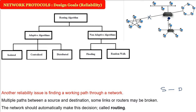Routing is all about sending data from one place to another properly. We have routing algorithms: adaptive algorithms (including isolated, centralized, and distributed) and non-adaptive algorithms (including flooding and random walk).